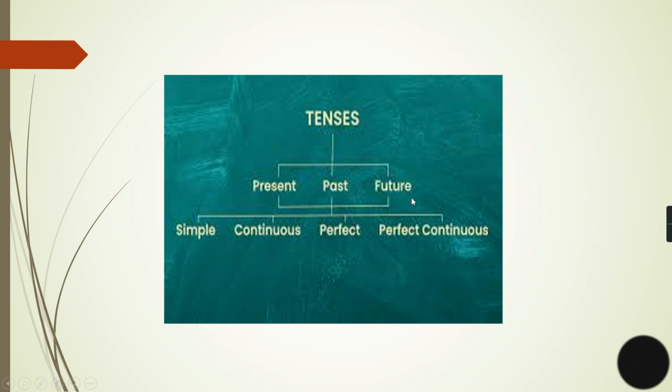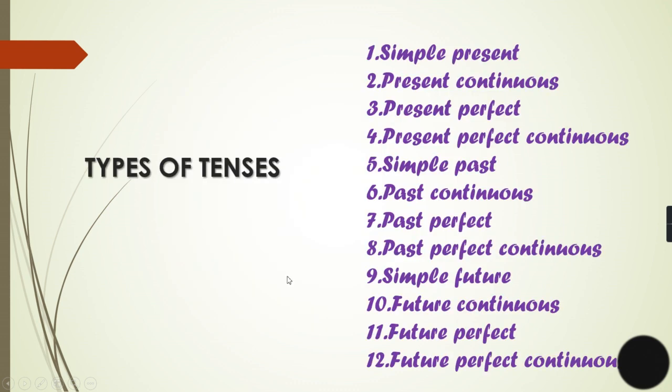Now broadly speaking we have 12 types of tenses: simple present, present continuous, present perfect, present perfect continuous, simple past, past continuous, past perfect, past perfect continuous, simple future, future continuous, future perfect, future perfect continuous.